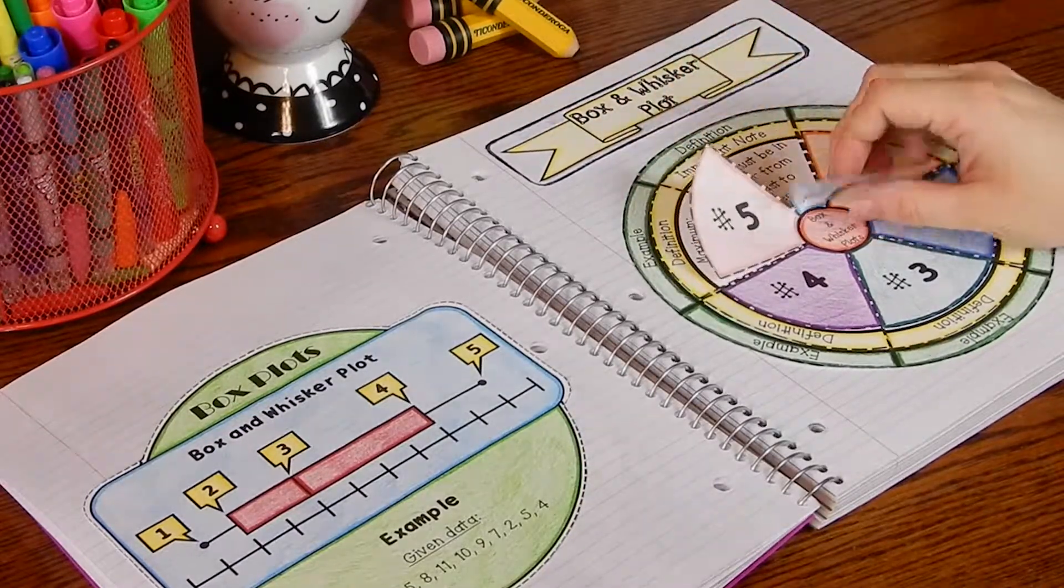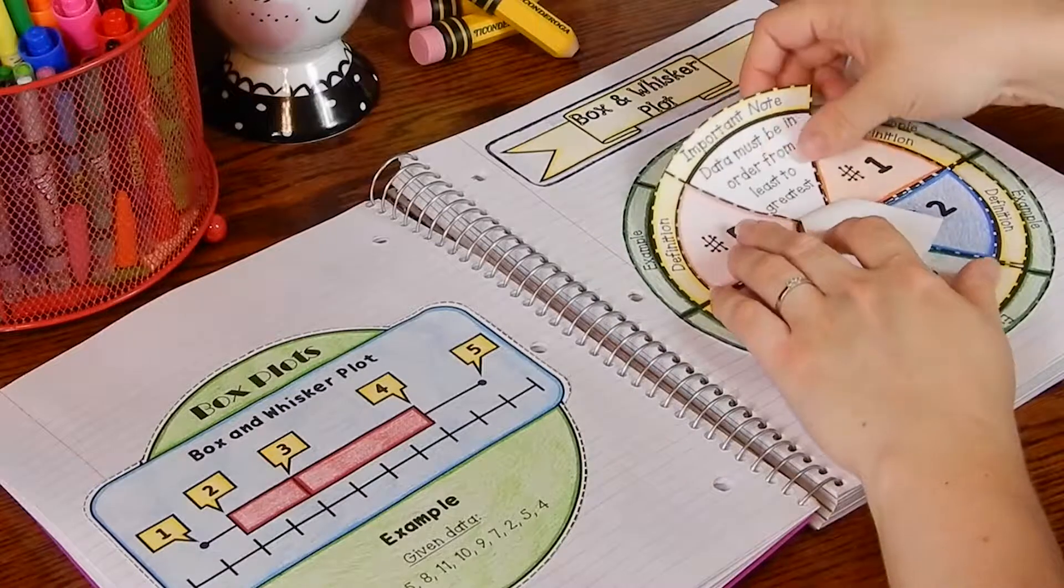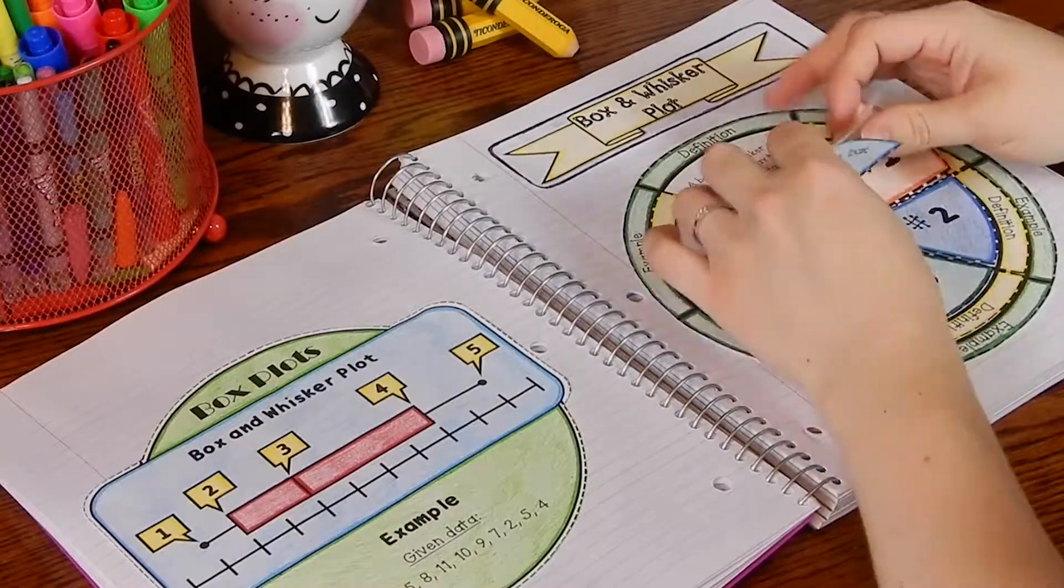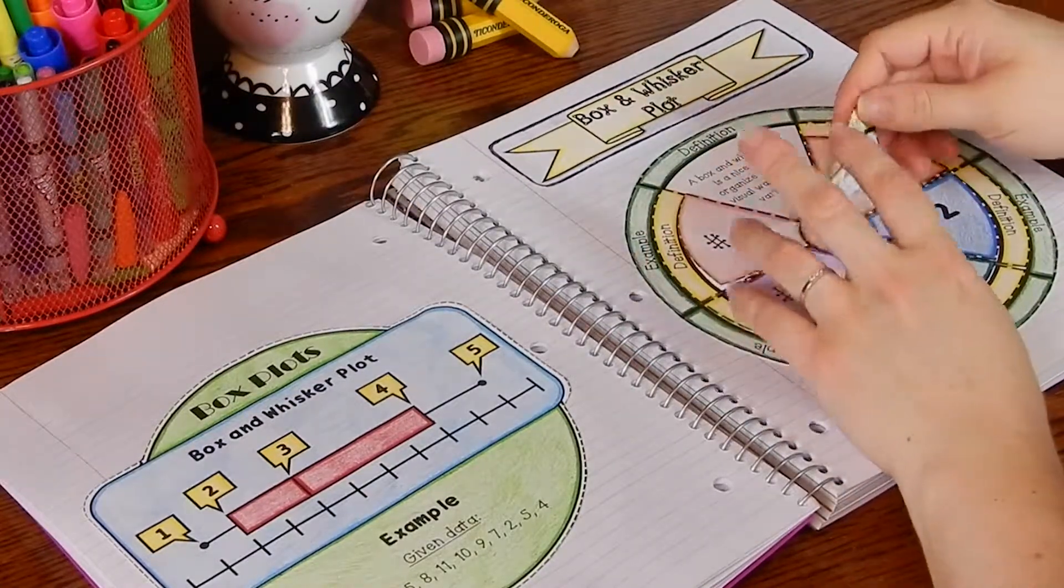It goes over the definition of a box and whisker plot, what is a box and whisker plot, and then it also gives you an important note about it.